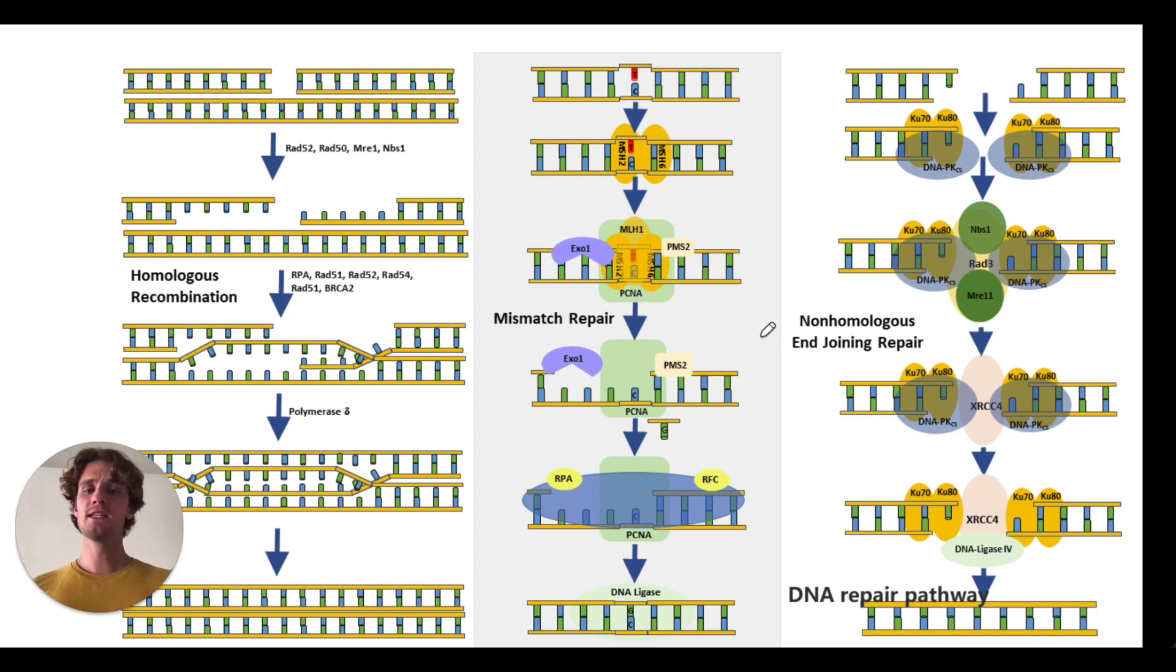But sometimes we have DNA strands that actually break. Here we've got a cut here and a cut here through two different DNA strands. You don't need to know all the details, but there are two different mechanisms for repairing these breaks. One is non-homologous end joining, where proteins just come in and smash these two pieces together and you end up losing some DNA information.